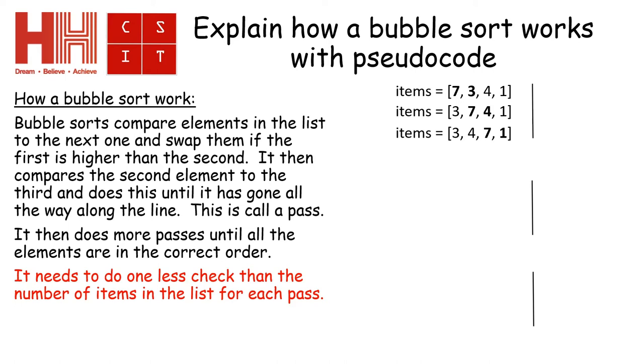I then move along another position and I look at the third element and compare it with the fourth. In this particular case, the seven will move to the end of the row. So I've now done one pass because I have done the three checks that I needed to do.